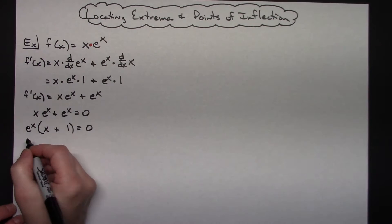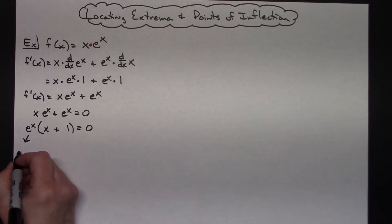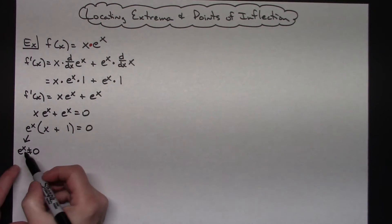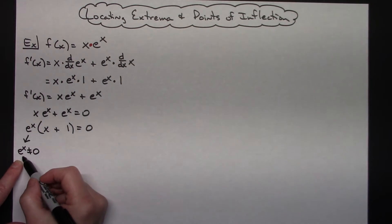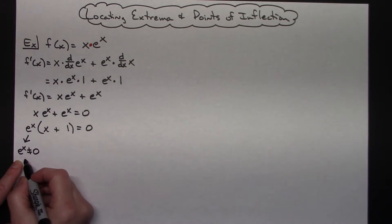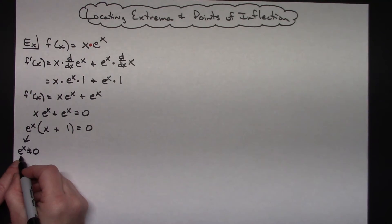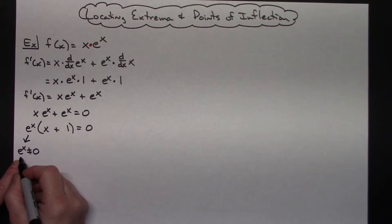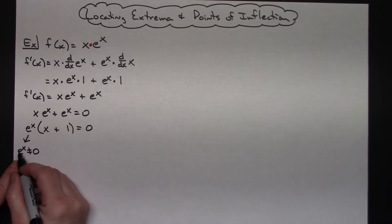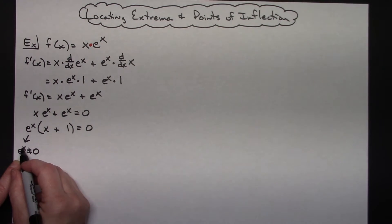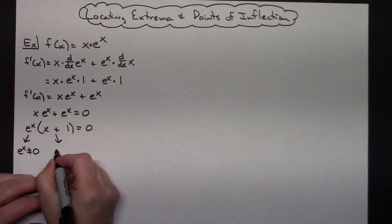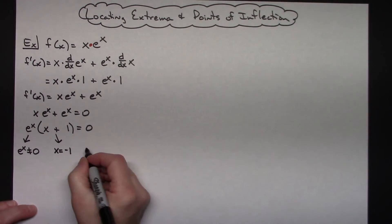Now it's factored, so I can set each factor equal to 0. Something you always need to realize: e to the x can never equal 0. You can think of that two ways — if you remember the graph of e to the x, it goes up and has a horizontal asymptote. You can also remember that e is about 2.71, so e to the 0 is 1, e to the first is 2.71, e to the negative 1 is 1 over 2.71 — e to the x can never equal 0. Setting the other factor equal to 0 gives x equals negative 1. So there is a critical point at x equals negative 1.